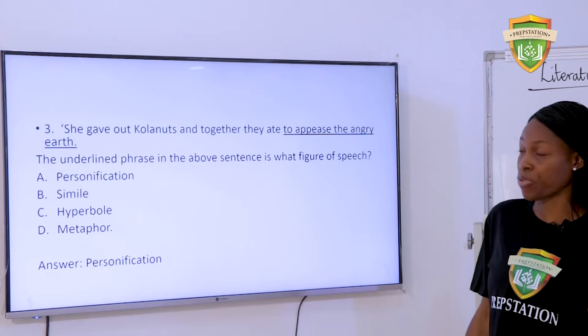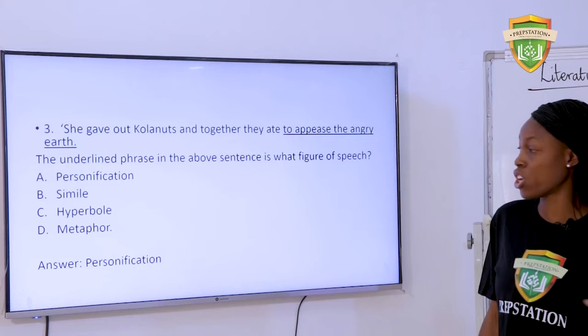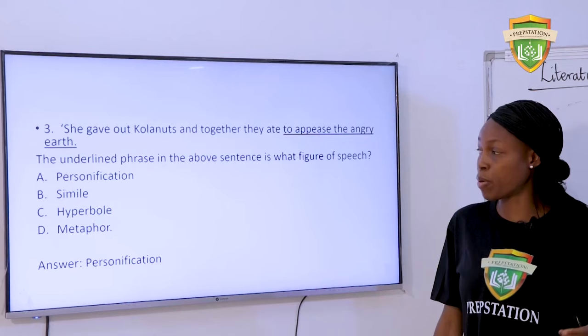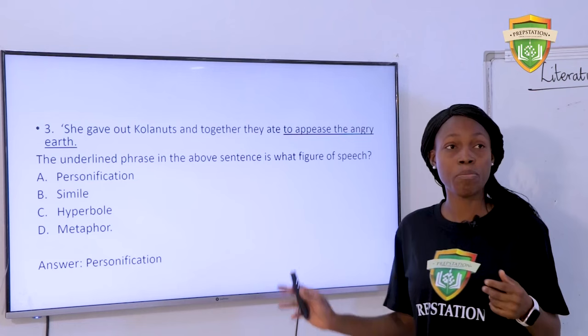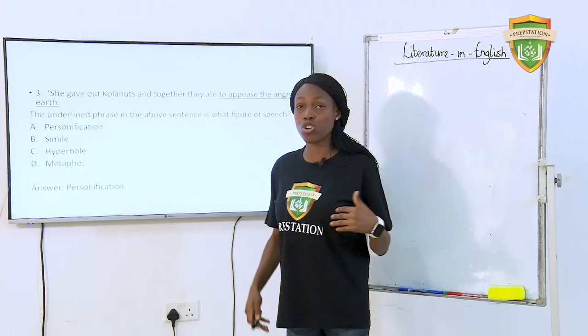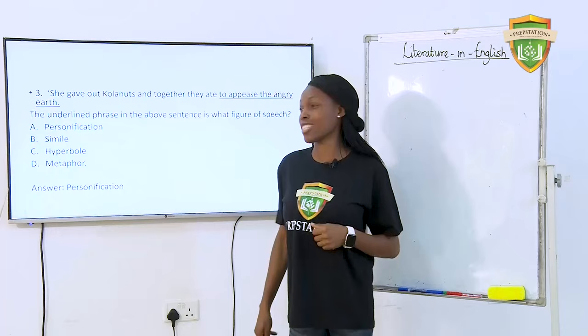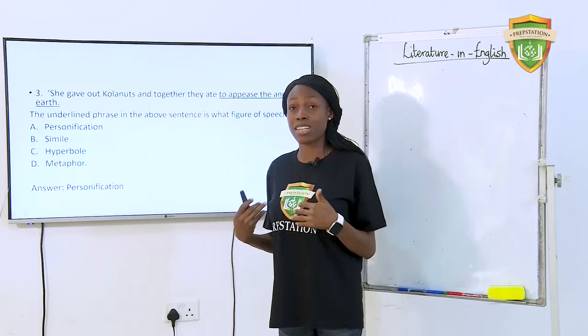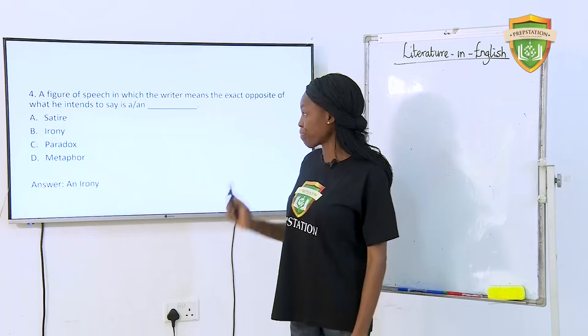Question 3: 'She gave out kola nuts and together they ate to appease the angry earth.' The underlined phrase in the above sentence is what figure of speech? A. Personification. B. Simile. C. Hyperbole. D. Metaphor. The answer is personification. The phrase underlined is 'to appease the angry earth.' The earth cannot be angry in that sense, and personification involves giving human characteristics to things that are not human beings.